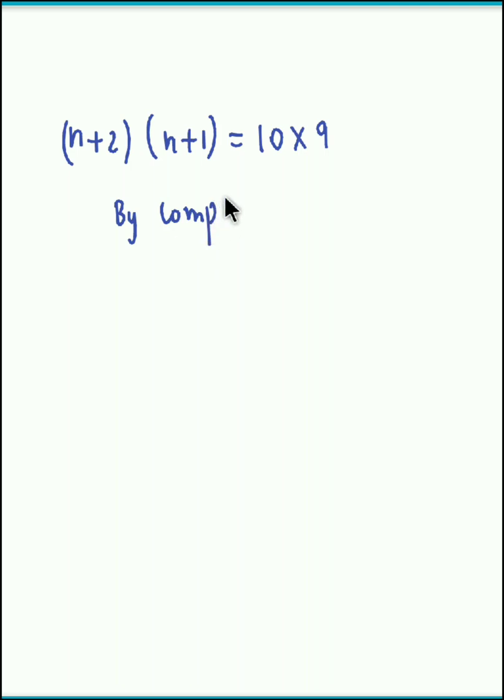So we could say by comparison, now either we equate the first factor with the first or second factor with the second. So we get n plus 2 equal to 10. So there n is equal to 8, or we could also equate the second factors. n plus 1 equals 9. So here again we get the same answer that is n is equal to 8. So the final value for n is 8.